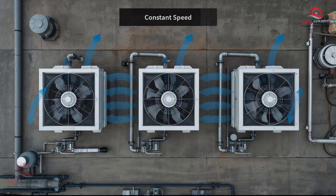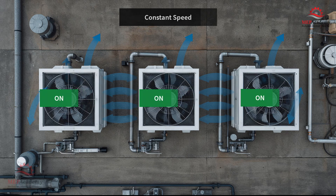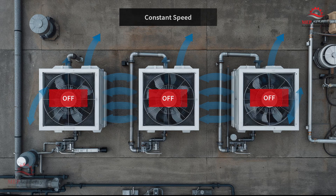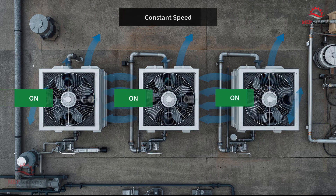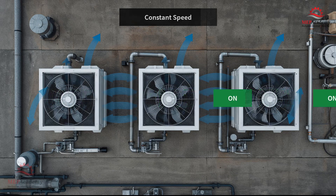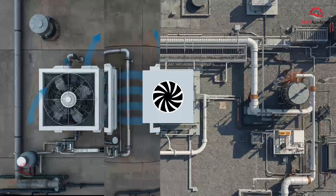First up is constant speed. These fans are either on or off. It's the simplest and lowest cost method, but it comes with drawbacks – coarse temperature control, higher average power, and more wear from frequent starts and stops. Capacity is controlled by cycling the fan on and off, and/or using basin bypass or water flow modulation.